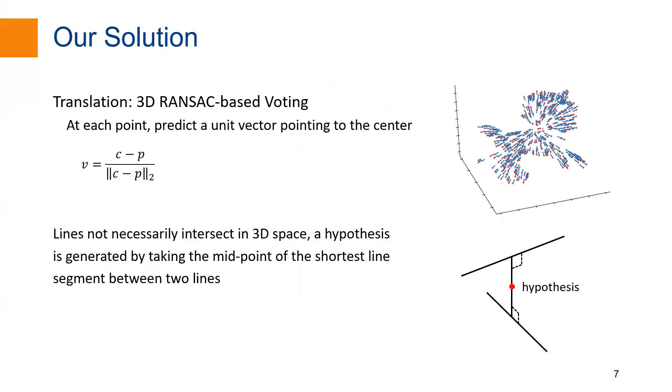To estimate translation, since our input is RGBD image, we extend the 2D RANSAC-based voting to 3D space. At each foreground point, our network predicts a unit vector pointing to the object center. During inference, randomly select two points and their associated direction vectors define two 3D lines. A hypothesis is generated by taking the midpoint of the shortest line segment between two lines. Votes are accumulated over all foreground points.